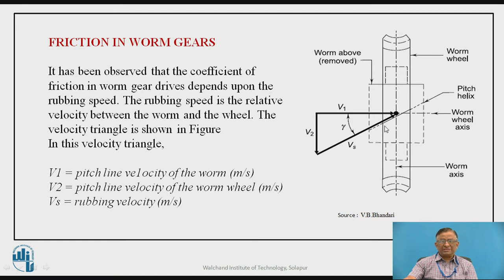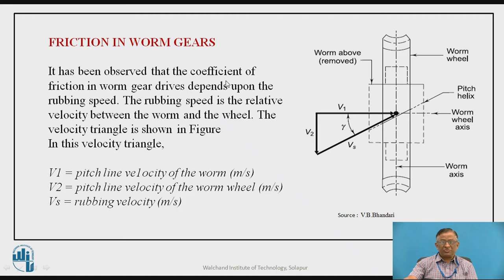As we know, the worm gear pair consists of a worm and worm wheel. The worm is in the form of a helical screw and the worm wheel is similar to a helical gear, where sliding friction is predominant between the worm and worm wheel. This is the basic difference between the worm gear pair and other gear pairs, and that is why frictional losses are quite heavy, and frictional forces are also quite heavy. That is why the coefficient of friction in worm gear drive is an important design requirement, and it depends upon the rubbing speed.